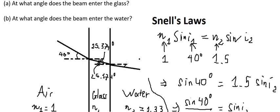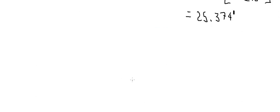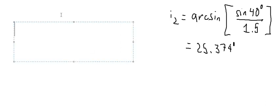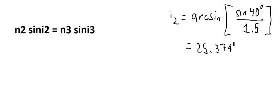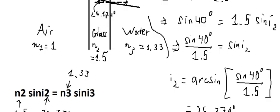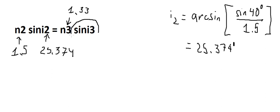So we will use the same technique for this final angle in here. We just use Snell's Laws. And now, you will got about n2 sin θ2 equals to n3 sin θ3. So n2 we will got about 1.5. θ2, this is about the number we just found here, 25.374 degrees. And n3, that's about the water, 1.333 degrees. And the last one, we just find about sin θ3.